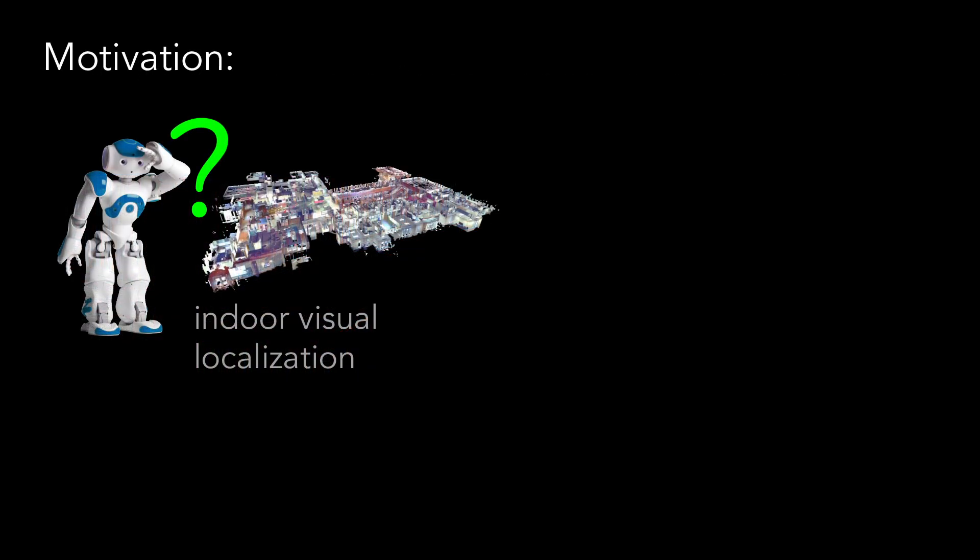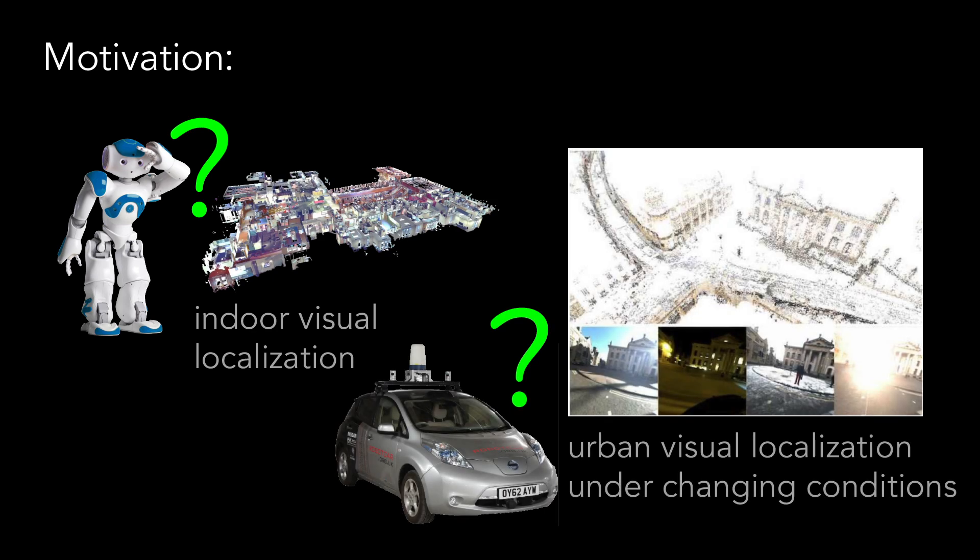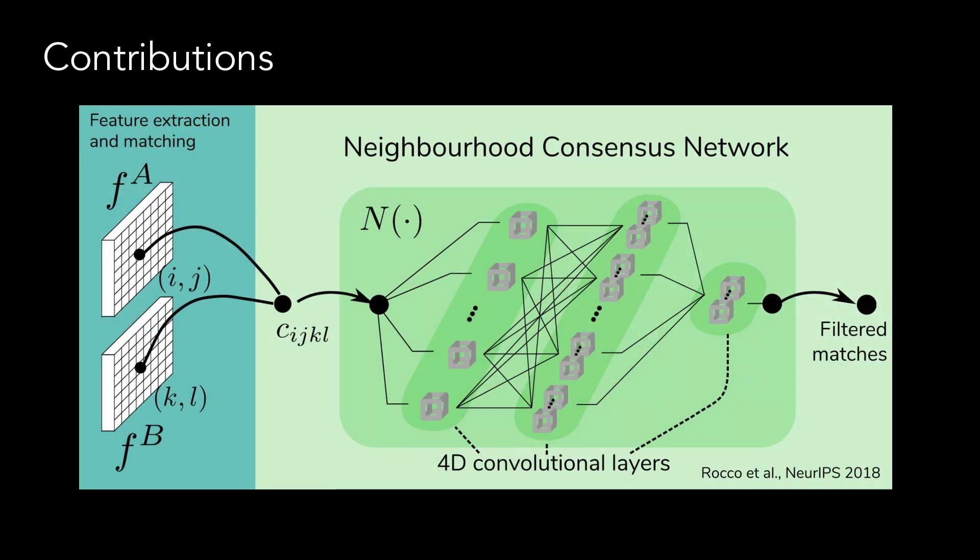or scenes containing repetitive structures, as is frequently the case for indoor scenes. Our motivation is to improve the performance of visual localization in both indoor situations and also outdoor urban localization where there can be change in weather and illumination conditions.